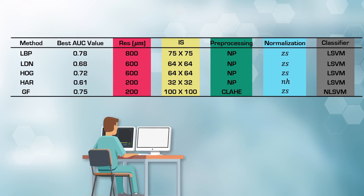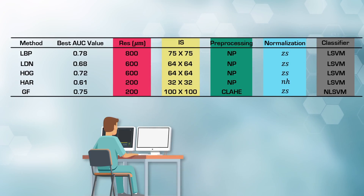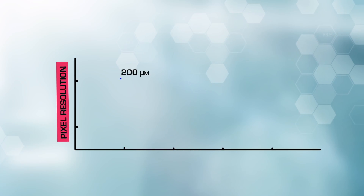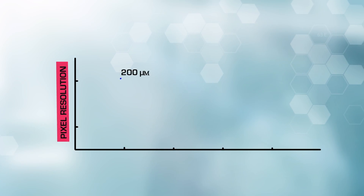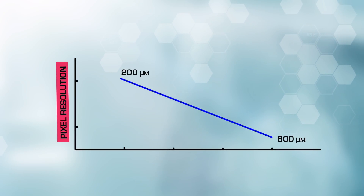LBP, LDN, HOG, and HAR achieved their best values with linear SVM, whereas GF achieved its best AUC value with non-linear SVM. The researchers identified that pixel resolution can be decreased to far lower than the regularly used 200 microns for most of the texture analysis methods.